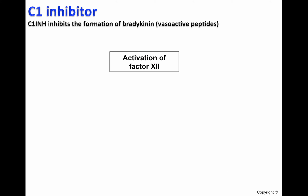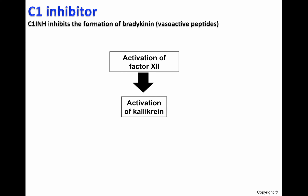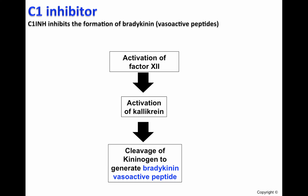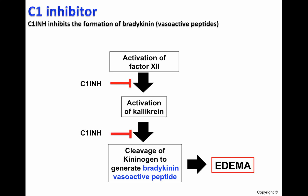In addition, C1 inhibitor inhibits the formation of bradykinin, which is a potent vasoactive peptide. The activation of factor 12, a factor that participates in the coagulation cascade, leads to the activation of kallikrein, which cleaves kininogen to produce the vasoactive peptide called bradykinin. Bradykinin participates in the formation of edema. C1 inhibitor inhibits the formation of bradykinin at two different levels, as you can see in this diagram.